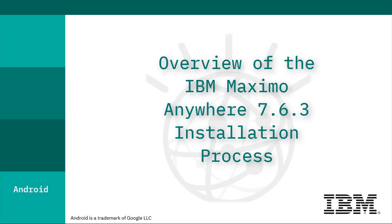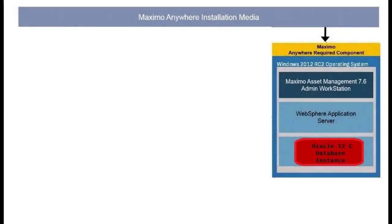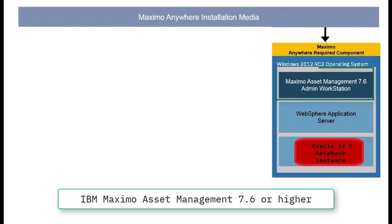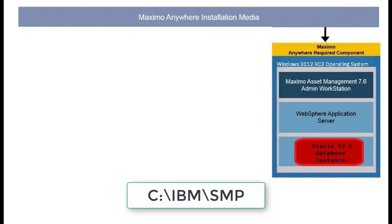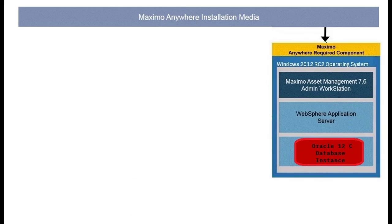Welcome to the IBM Maximo Anywhere installation course. In this series of videos, we walk through an installation of Maximo Anywhere version 7.6.3 that uses Oracle 12c database and an Android mobile device. Before installing Maximo Anywhere, verify that you have an installed, operational, and accessible IBM Maximo Asset Management version 7.6 system. Throughout this series of videos, the Maximo admin workstation is the computer that contains and manages the corresponding C-IBM SMP directory structure for your Maximo environment.